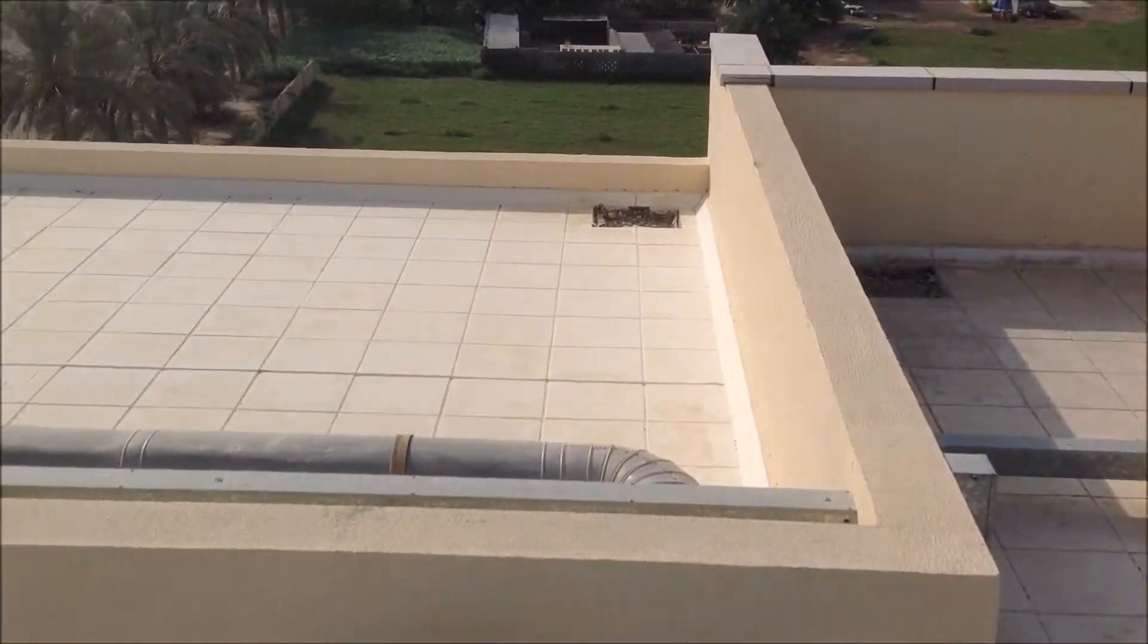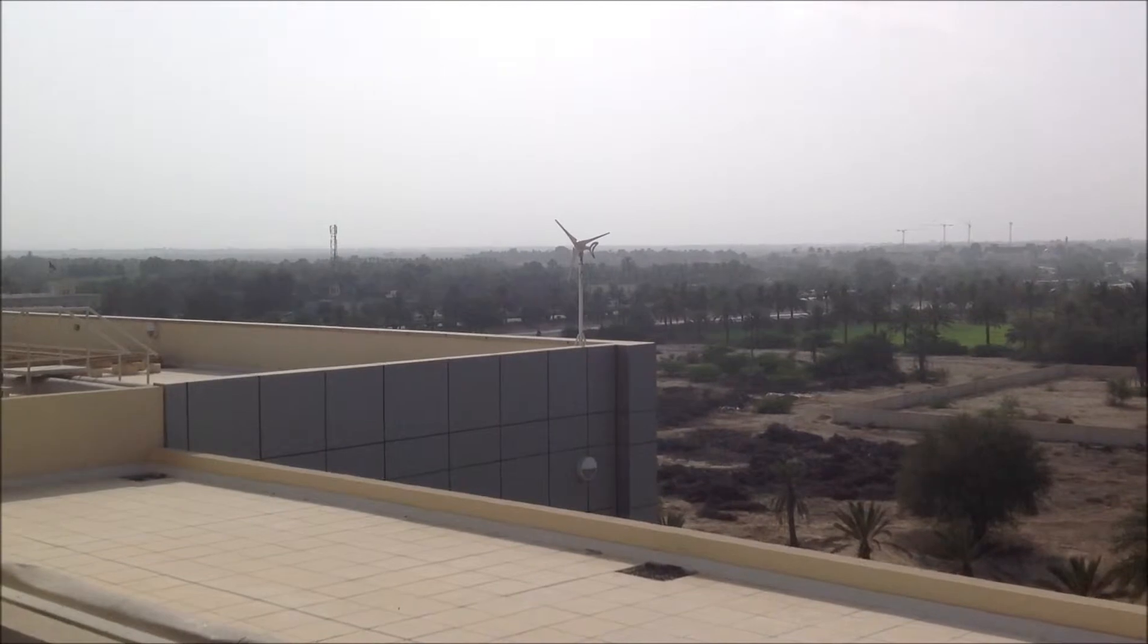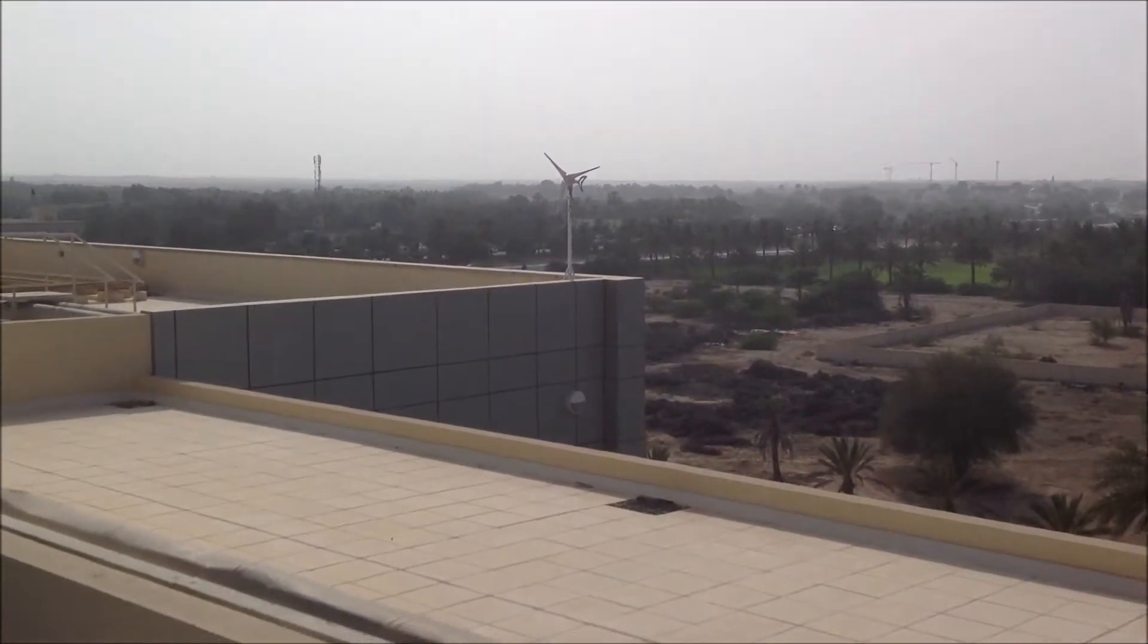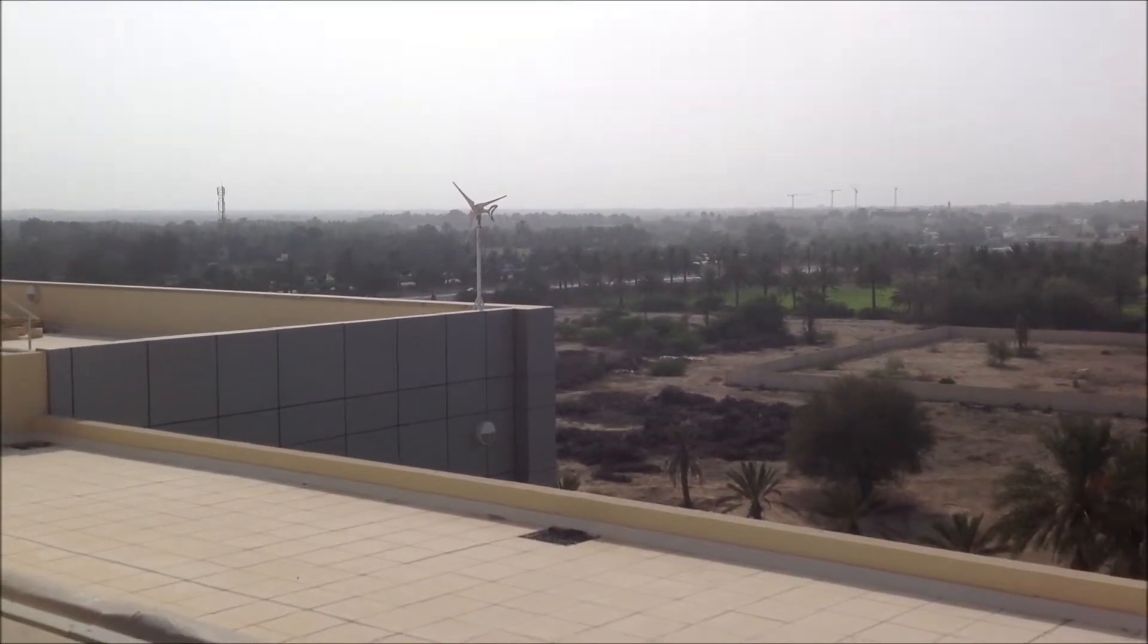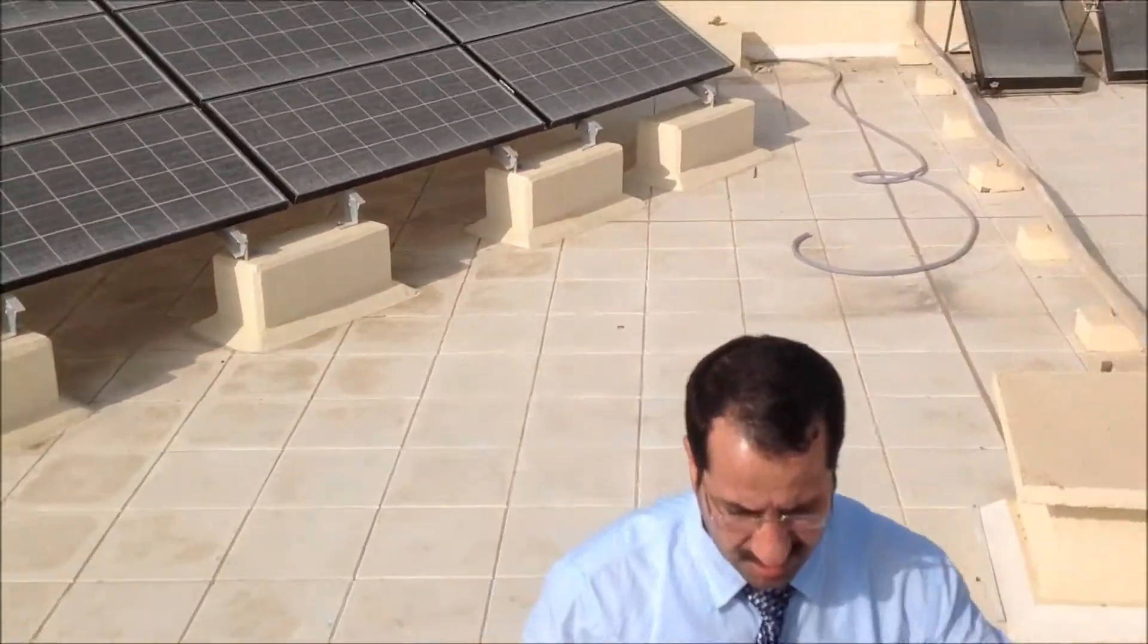There is another system, system number four, on the other side, which is wind-solar. There is a horizontal panel there and the wind turbine there. The wires or cables come to the lab. Let's go inside to continue our discussion and explanation.